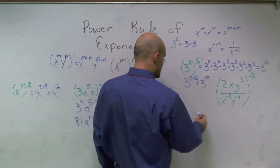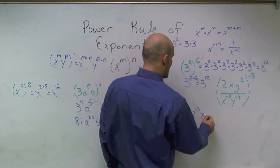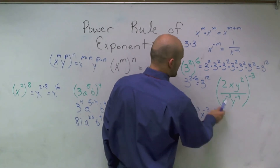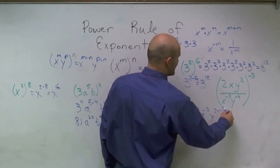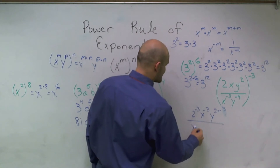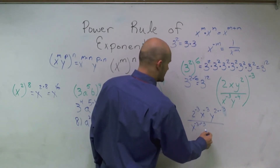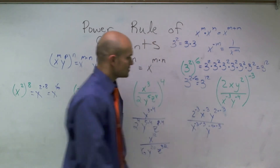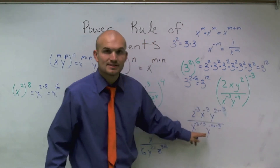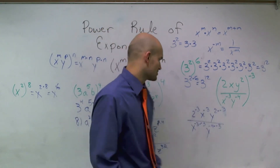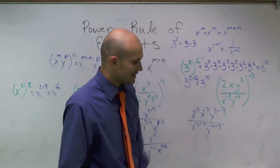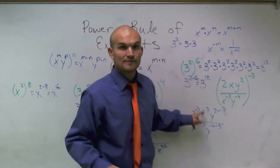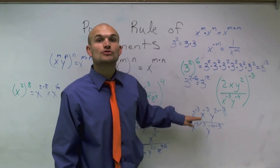So I distribute and get: 2 to the negative 3rd power, x to the negative 3rd power, y to the 2 times negative 3 which is negative 6th, all over x to the negative 3 times negative 3, and y to the negative 4th times negative 3. Now I evaluate: 2 to the negative 3rd is 1 over 2 cubed, so that's 1 eighth — my 8 goes on the denominator.